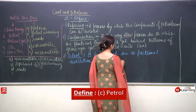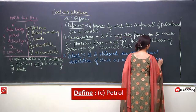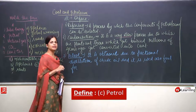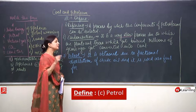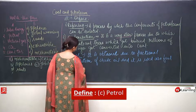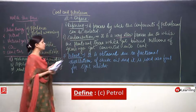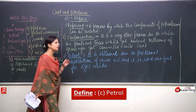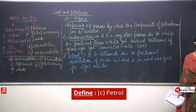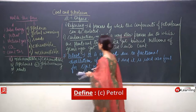And where is it used? It is used as a fuel for light vehicles — not trucks and buses, those are heavy vehicles. So petrol is obtained due to fractional distillation of crude oil and it is used as a fuel for light vehicles. Now come to the fourth one — I will have to erase this side.